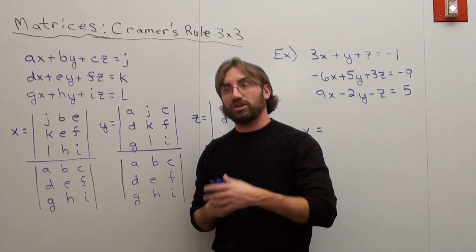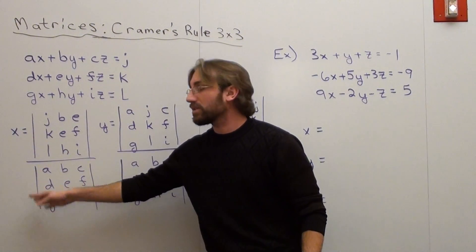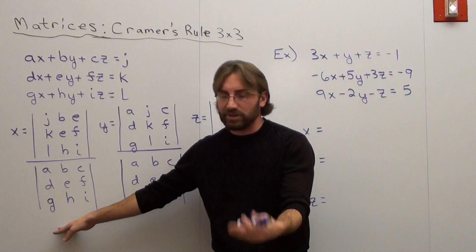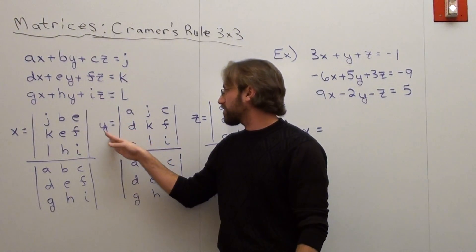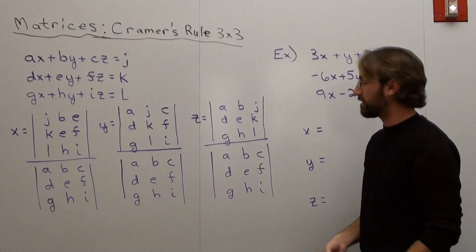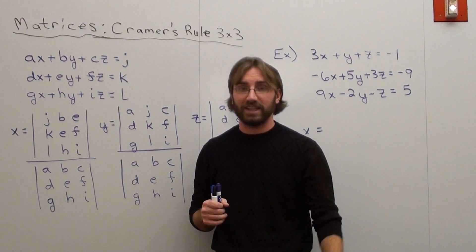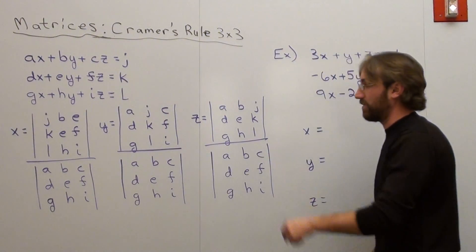The determinant, in order to figure out the answers, is this is the x-value matrix. This determinant over normal determinant. This one is this determinant over this determinant. Z is this determinant over this determinant. But you've got to make sure that this determinant is not equal to zero. Otherwise, it gives you none to find in the answer. And that's not going to work.